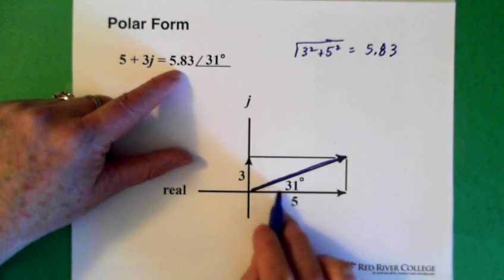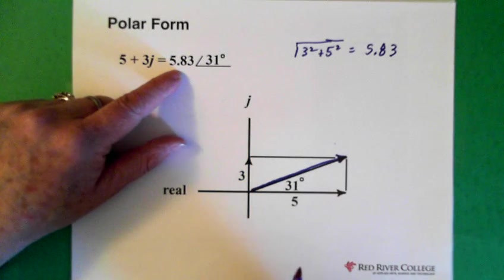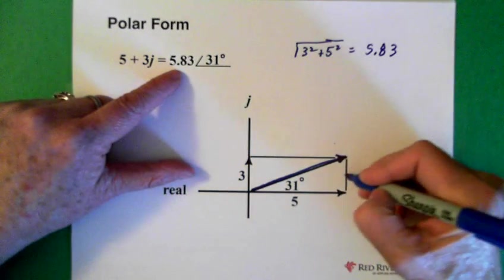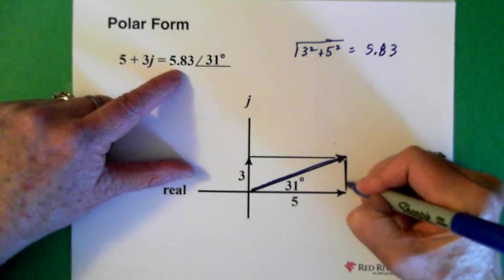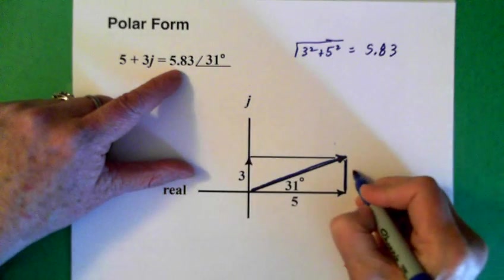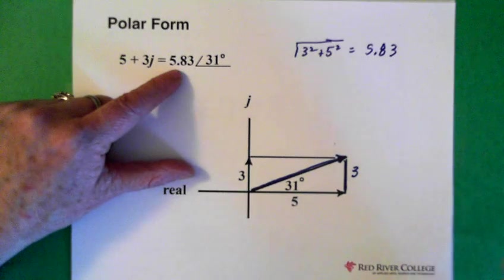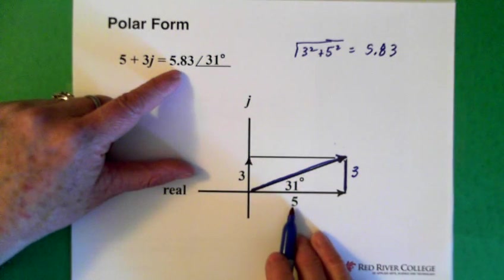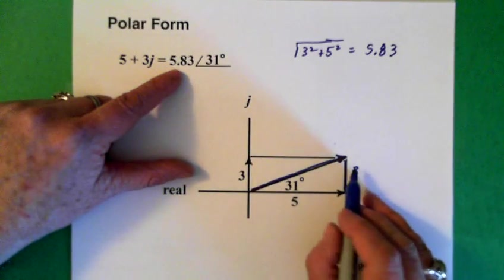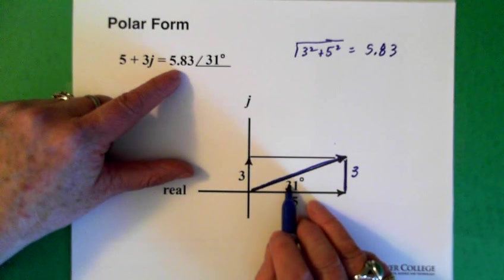And we'd want this angle as well. And we'd solve for that angle by using inverse tan. So, we know that this here is our 3. We know that that's our 5. And there's our angle, our 31 degrees.